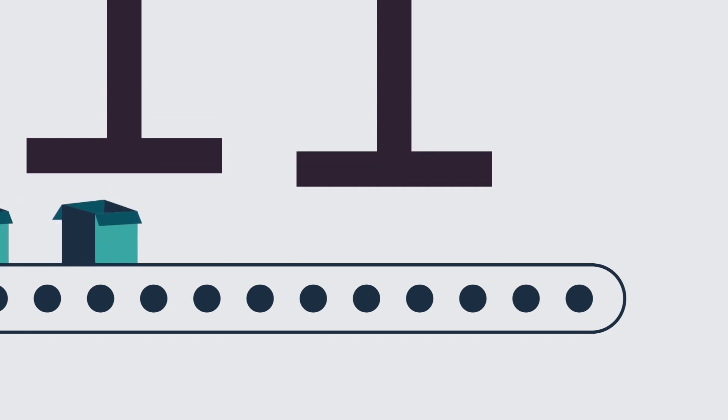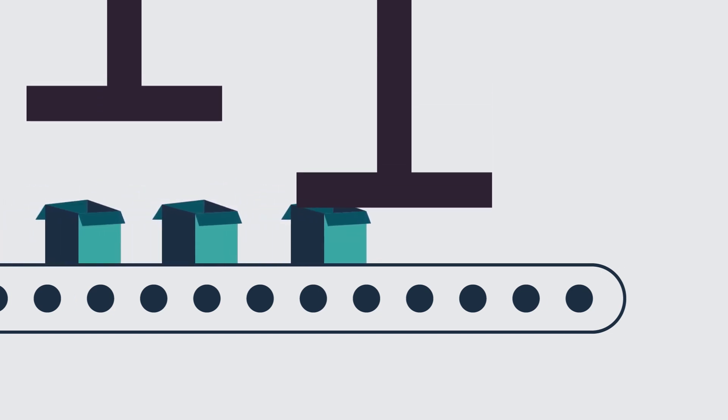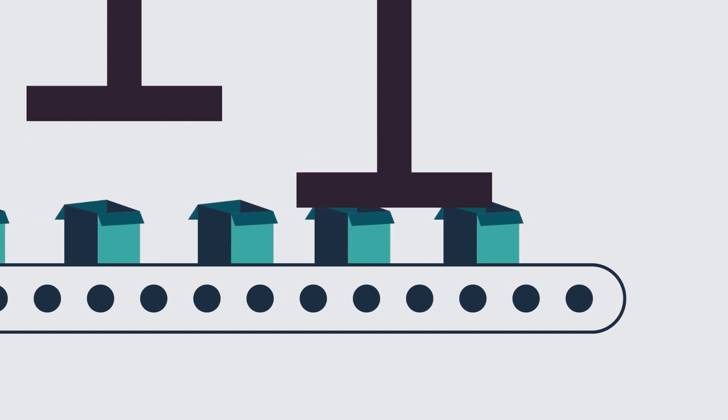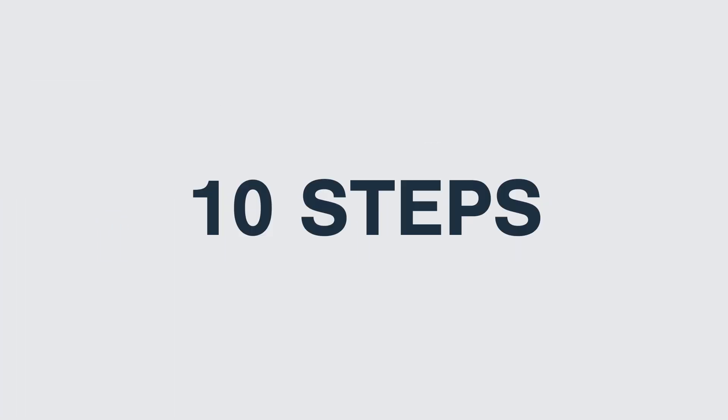In short, it takes 20 to 25 machines and a number of specialists to work closely together from the cells to module. The whole process involves around 10 major steps, which can be divided into several sub-steps, to produce a complete solar panel.